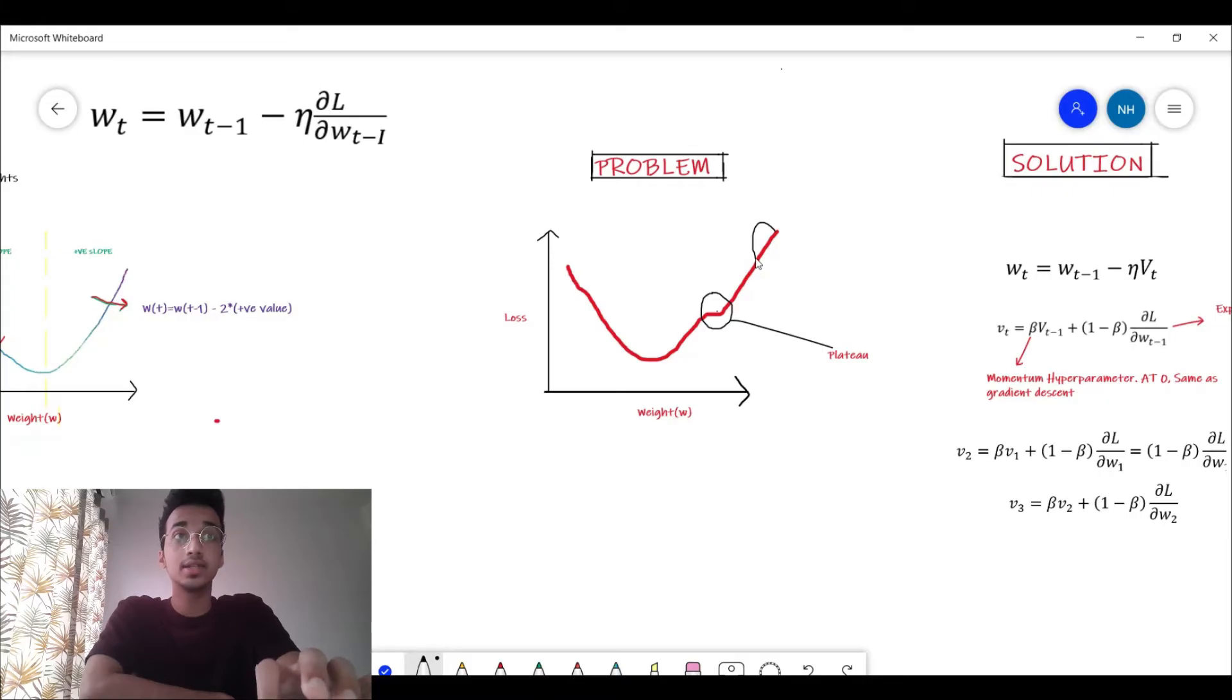What gradient descent does is it takes the slope at just the previous time step in order to make a decision about moving forward, and it will always take a fixed step size. As it comes down, let's say it reaches somewhere over here where the plateau is. At this point the slope is zero.